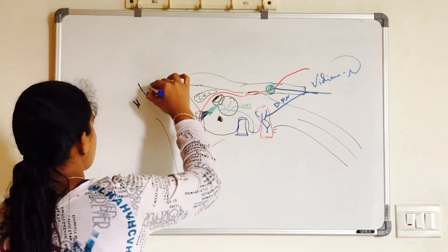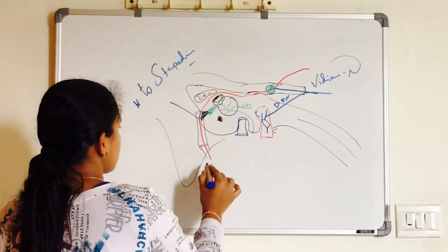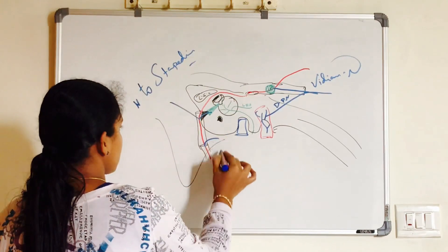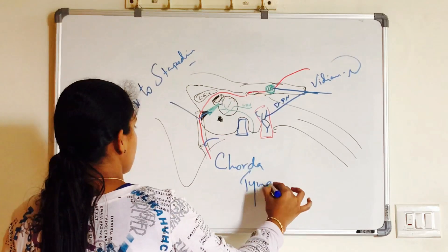You can see greater petrosal nerve is given at the level of geniculate ganglion. And the stapedius muscle nerve to stapedius. Six millimeter above the stylomastoid foramen, you have chorda tympani nerve.